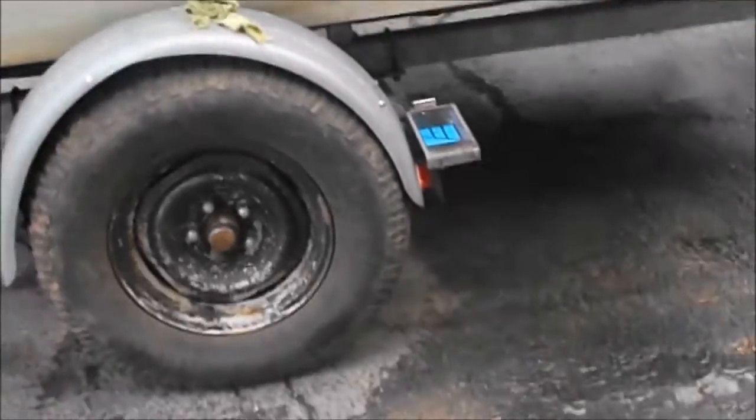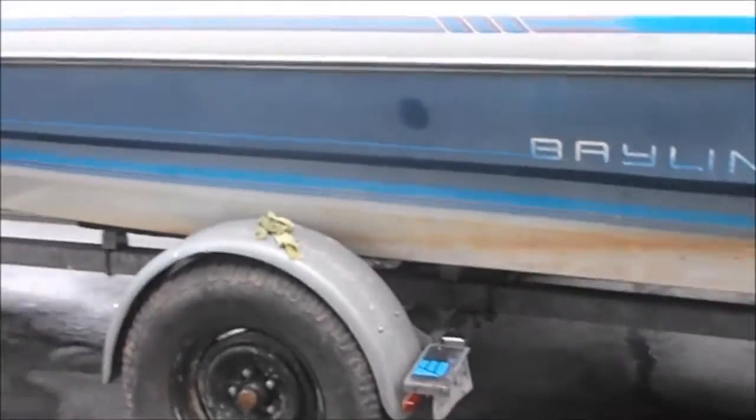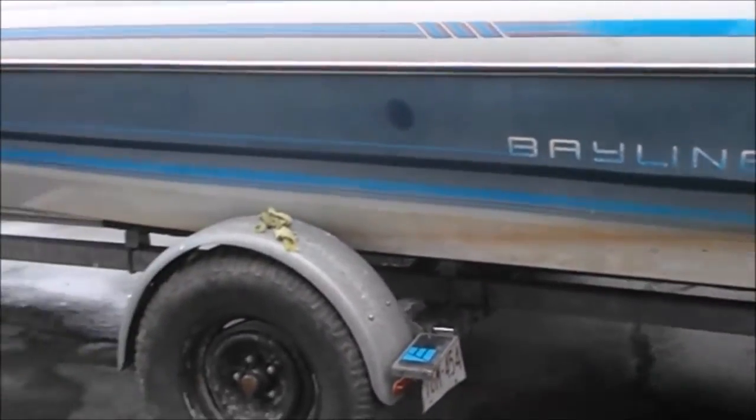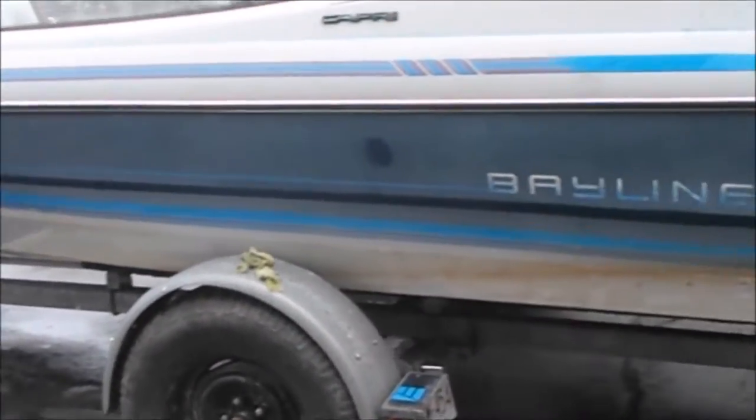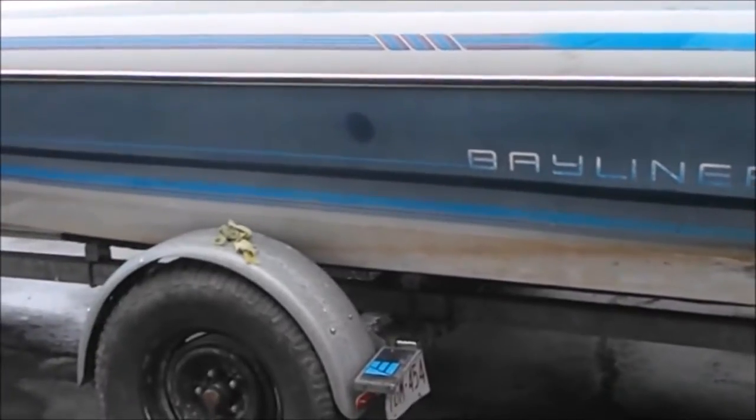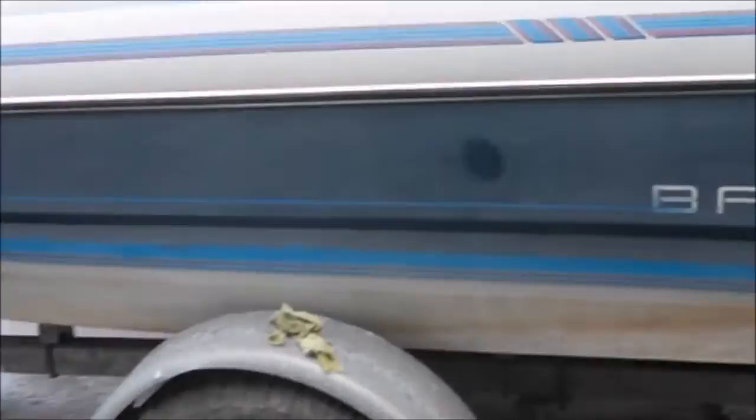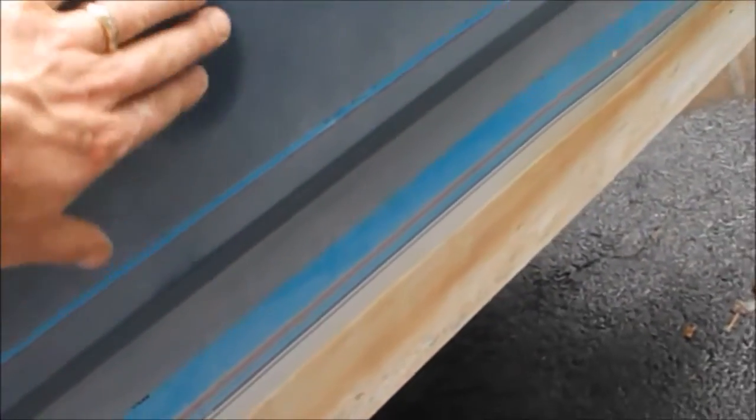Hi, this is a do-it-yourself video on how to buff out and restore the finish on a boat or anything with a painted or clear coated finish. This is a 1989 Bayliner boat and it's had several years of neglect. The finish has gone very hazy. Just with my hand I took some polishing compound and did a little spot like that, and you can certainly see the difference.